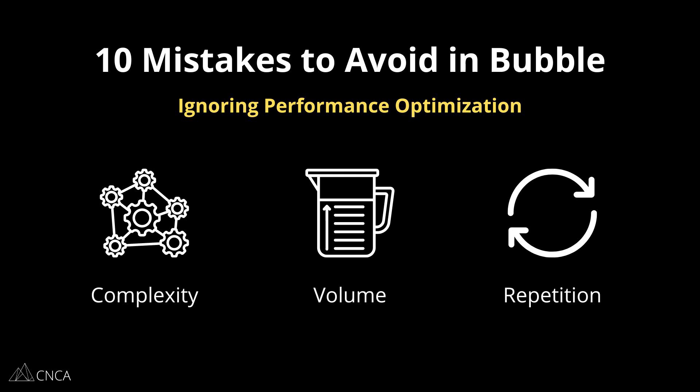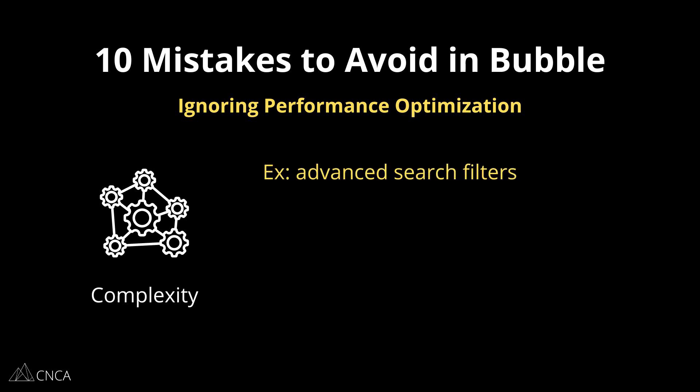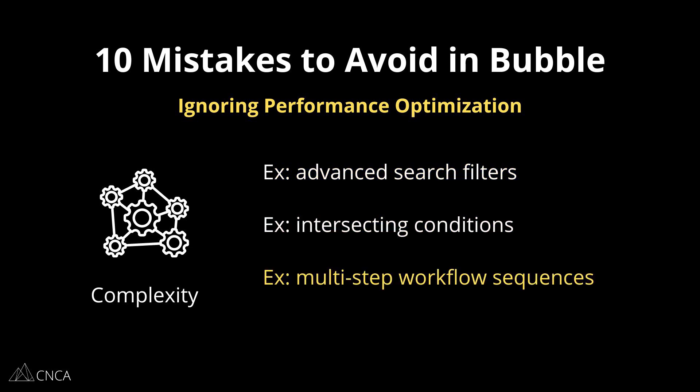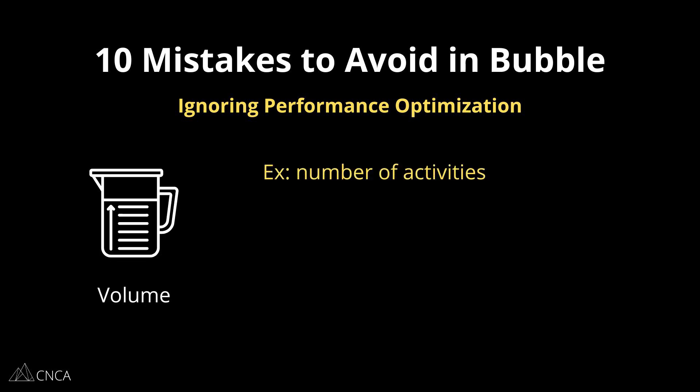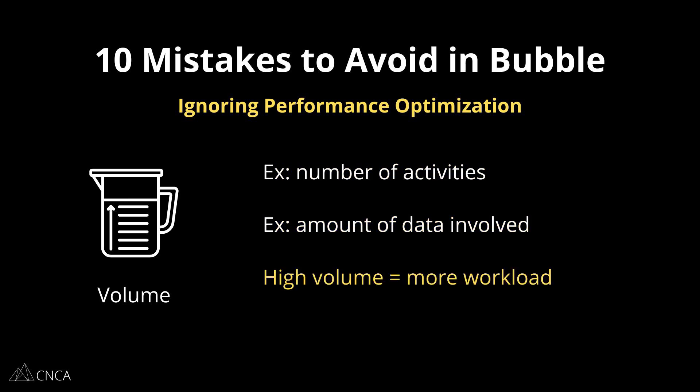This is a framework Bubble encourages its users to follow. Complexity can mean advanced search filters, a variety of conditional scenarios that all need to work together, or multi-step sequences each with their own searches and calculations. The more complex, the more likely you're using more workload, so these are areas where you want to pay close attention and make sure you're not overdoing it. If you can simplify and still get the same outcomes, you should do that. Volume can mean things like the number of executed activities or the amount of data involved. A high volume of simple activities can still lead to more workload simply because you're executing those activities a lot, so you want to watch out for excessive volume.